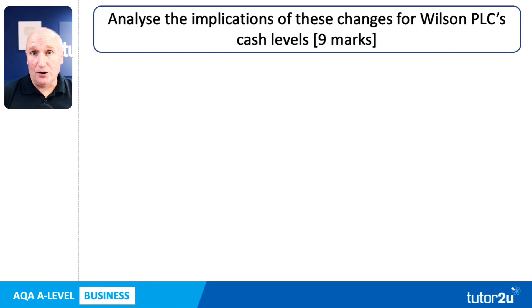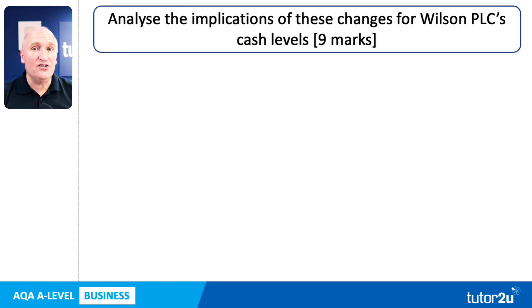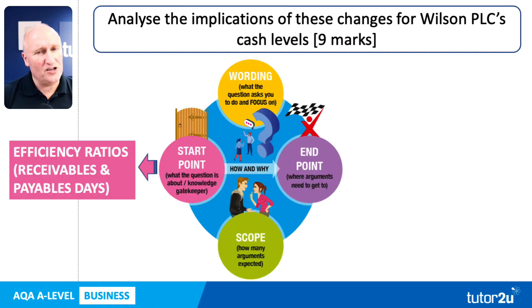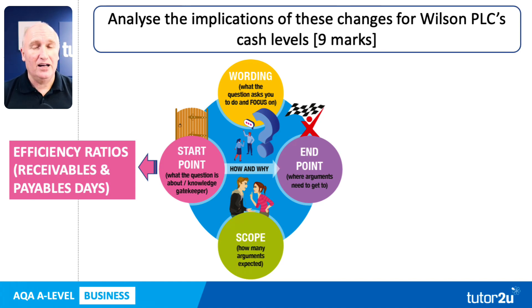We're back looking at another past AQA A-Level Business question. This was a paper one question worth nine marks. The question was: analyse the implications of these changes for Wilson PLC's cash levels. Wilson PLC was the name of the mini case study given for this question, which I'll show you in a second. They also gave us a table with two ratios — both efficiency ratios: receivables days and payables days.